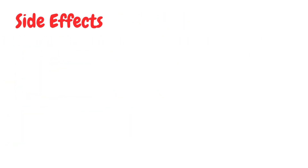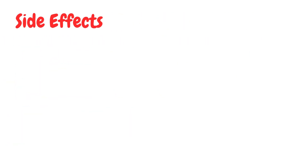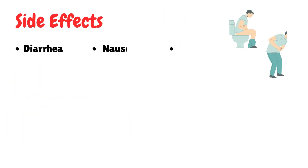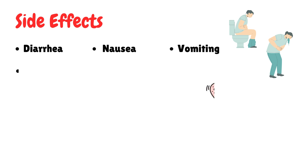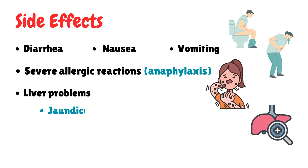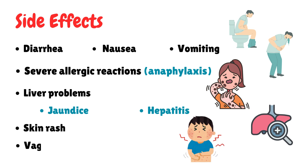Side effects of Augmentin tablet include diarrhea, nausea, vomiting, severe allergic reactions including anaphylaxis, liver problems including jaundice and hepatitis, skin rash, and vaginal yeast infection.